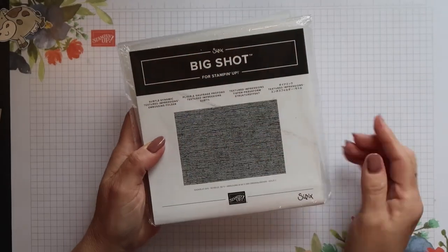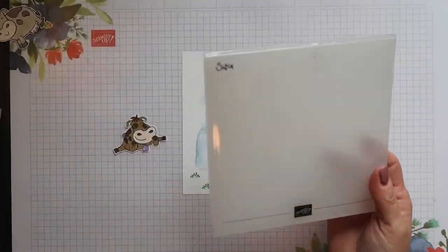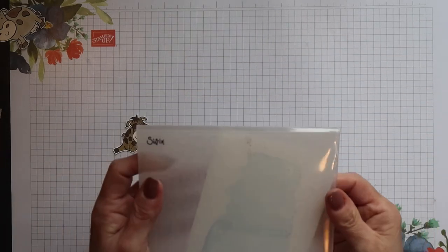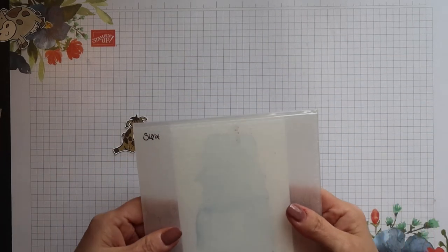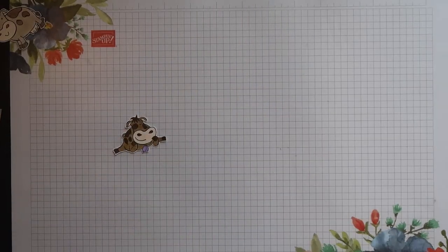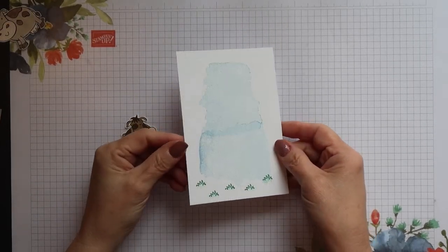And finally for this panel I'm going to run it through the die cutting machine with the subtle embossing folder and this adds a lovely texture to the card. Hopefully you can see that here.